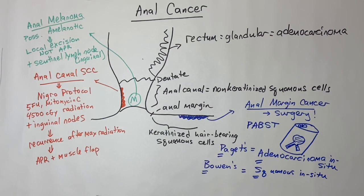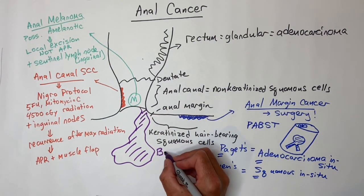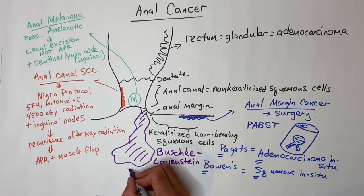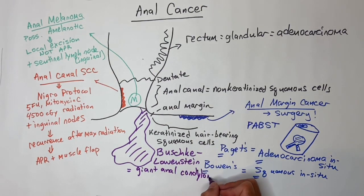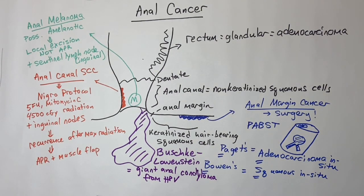A Buschke-Lowenstein tumor is a giant anal condyloma associated with HPV. Surgery, chemo, and radiation may all be needed to treat one of these.